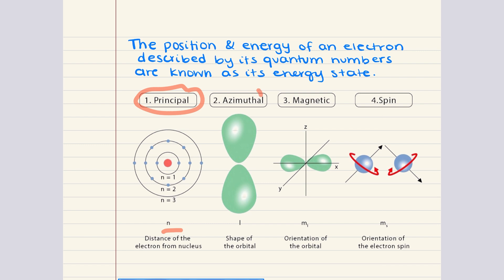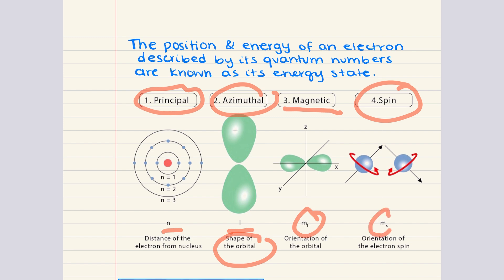Then we have the angular momentum quantum number l, which defines the subshell within a given energy level and determines the shape of the orbital. The magnetic quantum number ml then specifies the orbital orientation within a given subshell. Finally, the spin quantum number ms describes the intrinsic spin of an electron, which can be either plus one-half (spin up) or minus one-half (spin down).